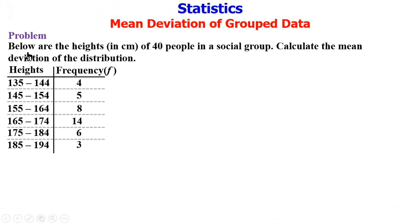So here is our problem: below are the heights in centimeters of 40 people in a social group. Calculate the mean deviation of the distribution. To start the solution to this problem, we have to bring in the mean deviation formula.